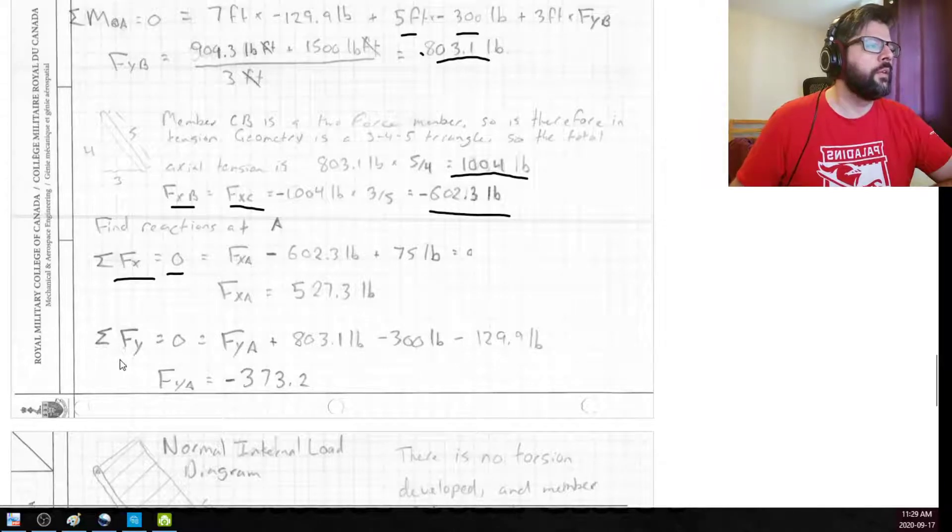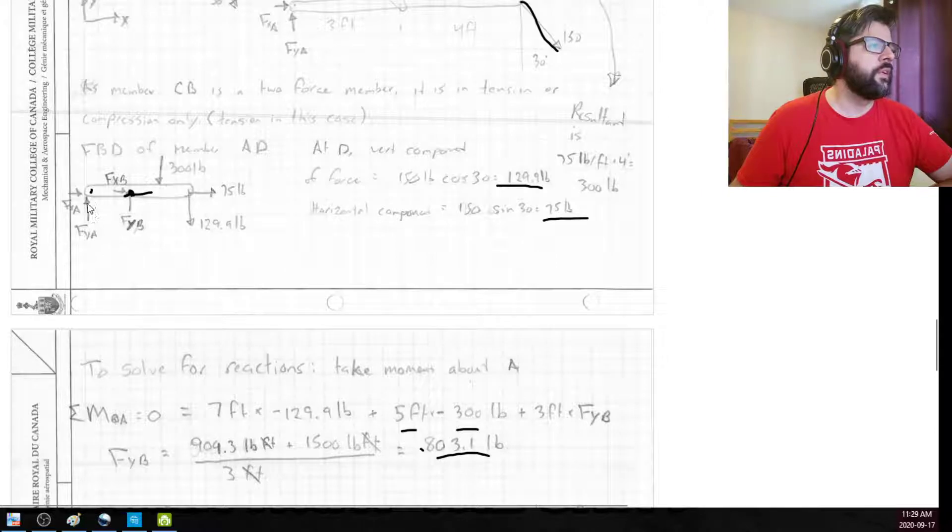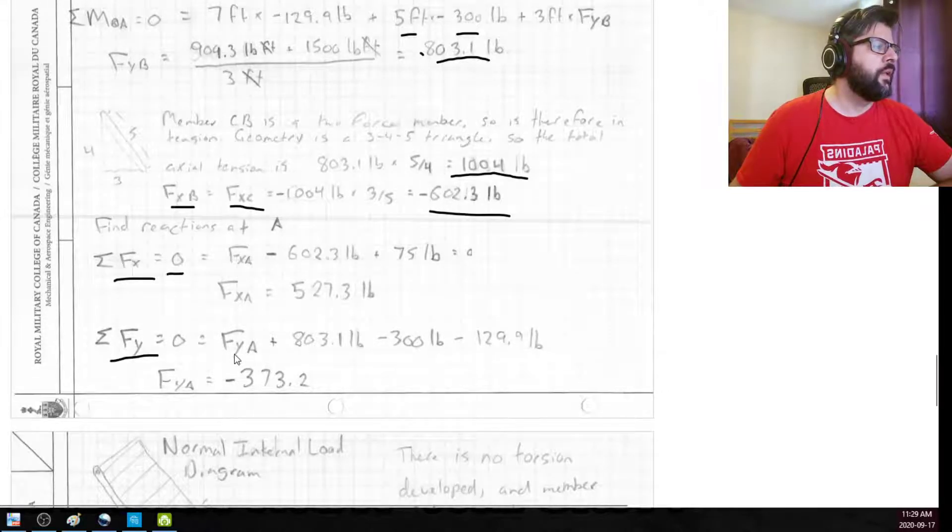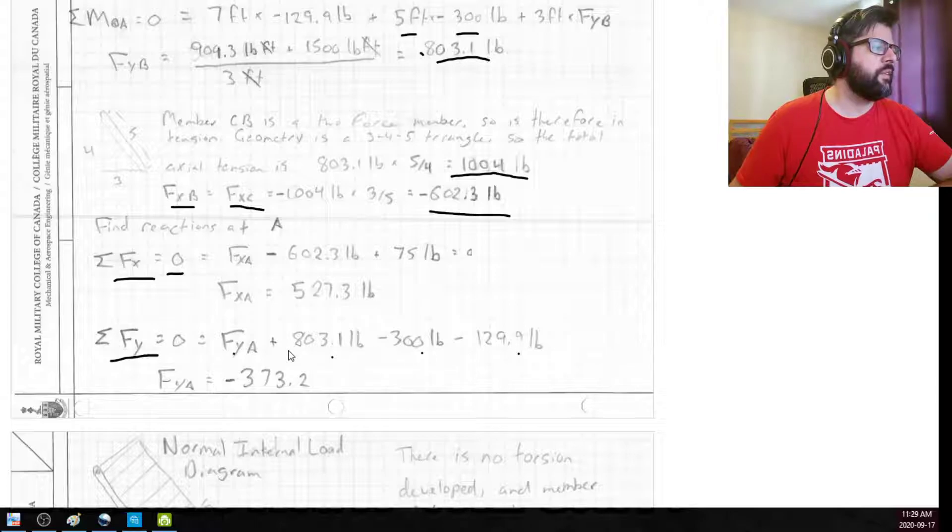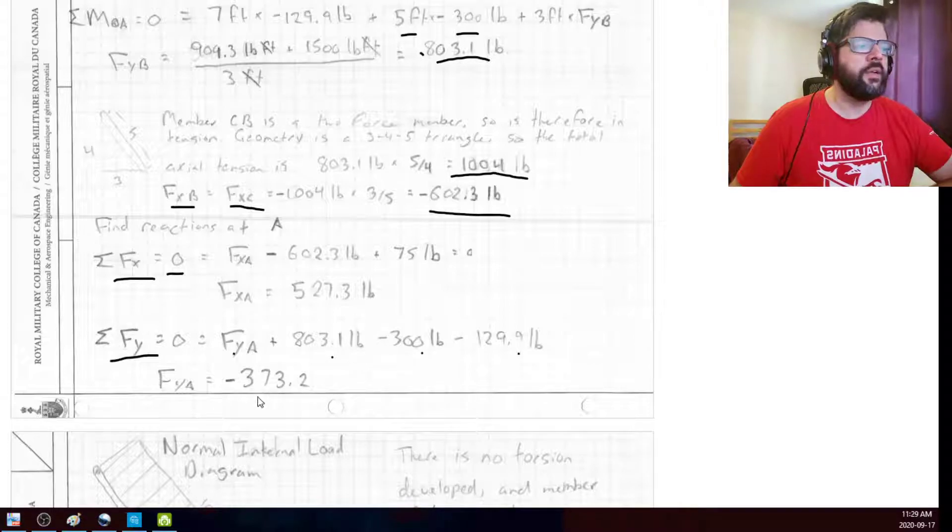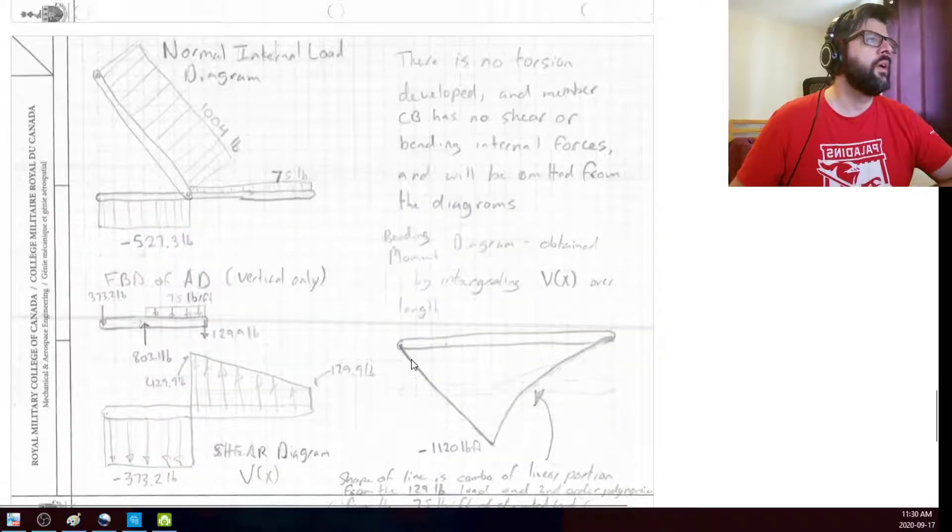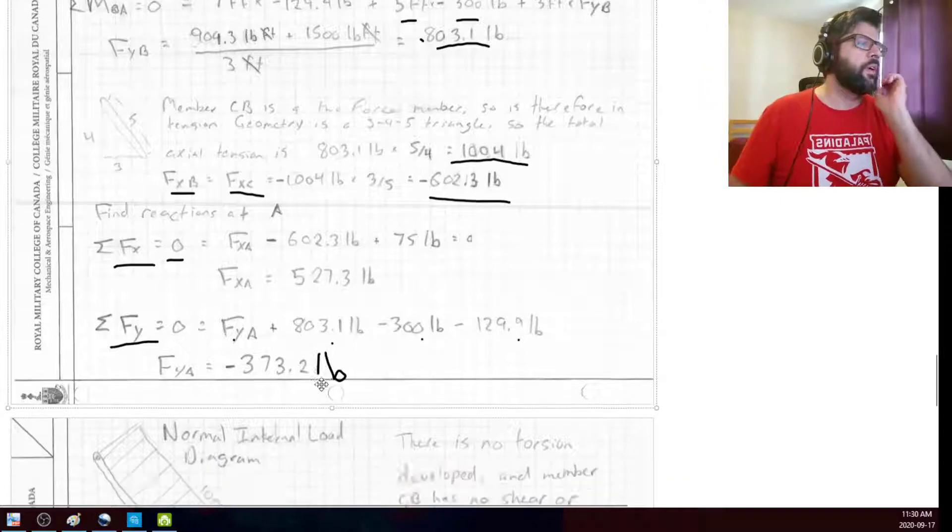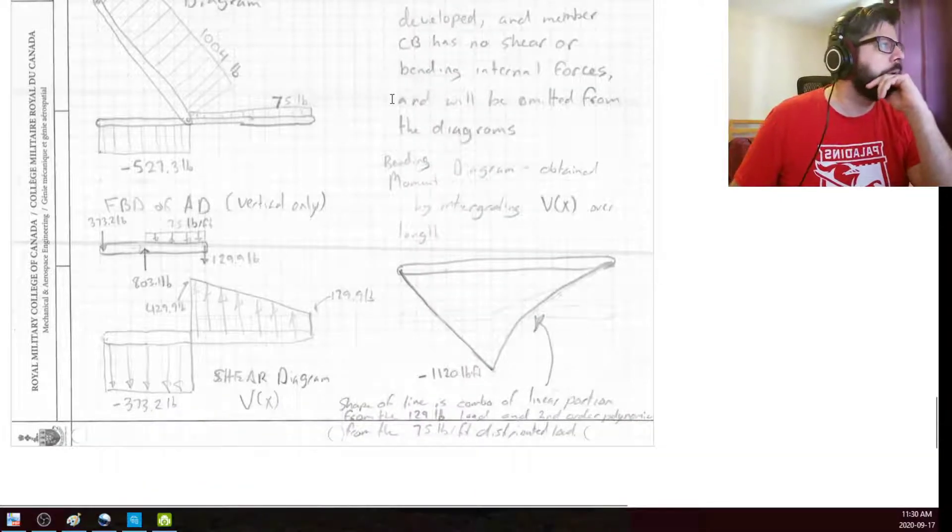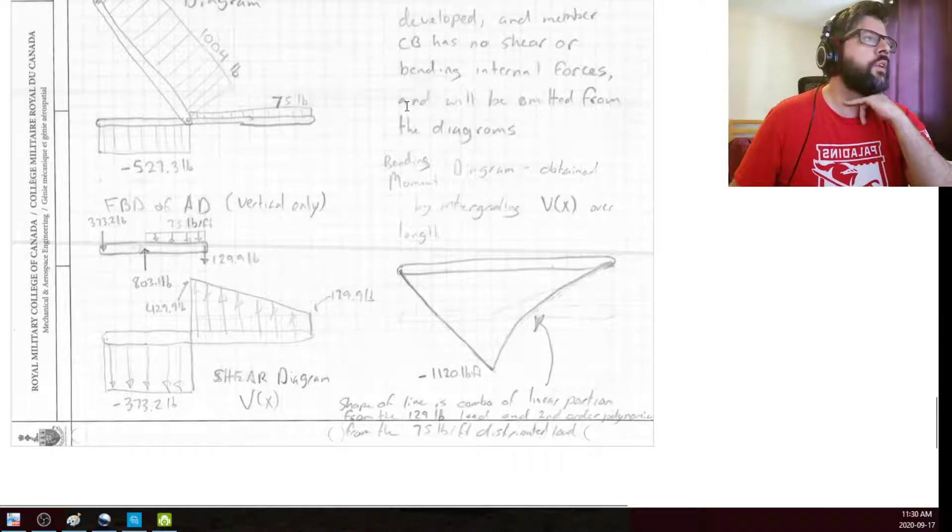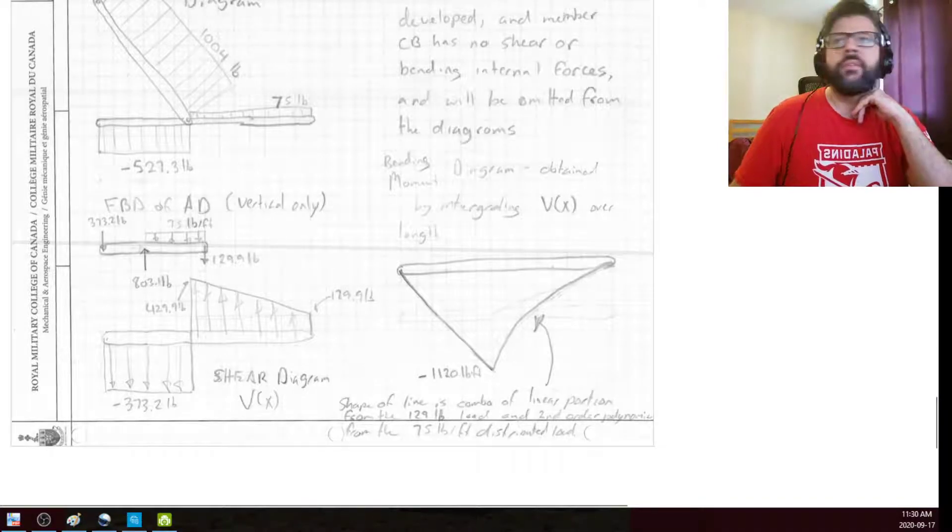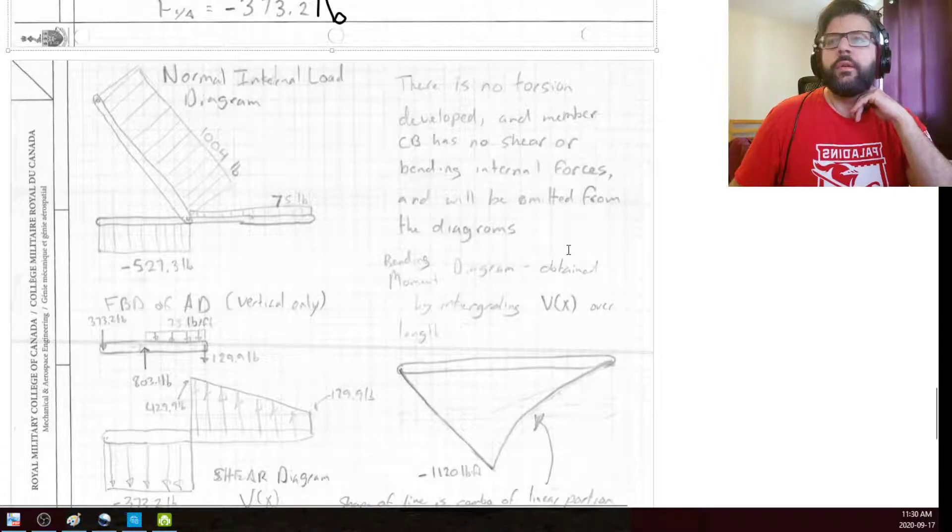Same deal for the FY components. We've got this one here. We've got this one here. We've got these two negative ones. So that plus that minus that minus that is equal to zero. Relatively easy to solve for that. So it ends up being negative 373.2 pounds. I forgot to put my unit there. That's pounds. Then we've got, now that we've got our reactions, we can essentially solve for, we can draw the diagrams then. We've got enough information to draw our diagrams here.